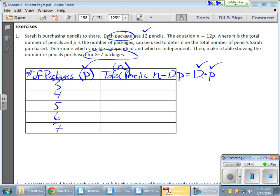What I do know, the number of packages and the total number of pencils, which greatly depends on the number of packages, which is what makes the total number of pencils the dependent variable, because it depends on or needs to know how many total packages there are.